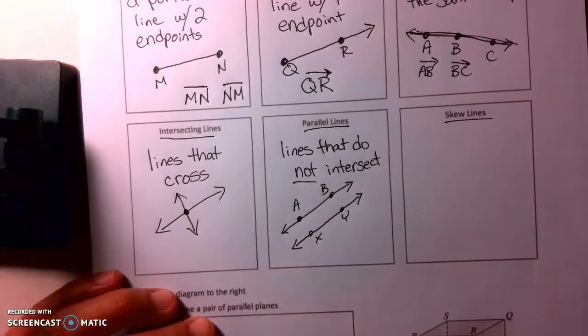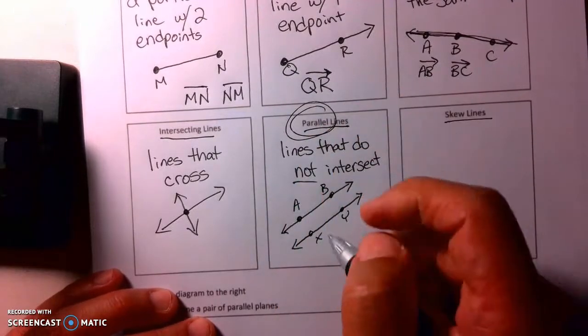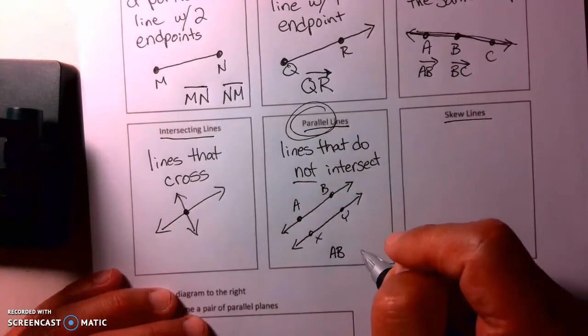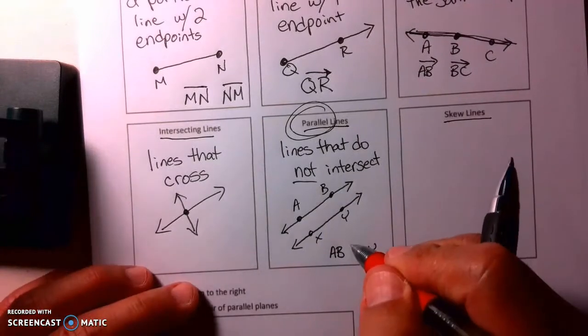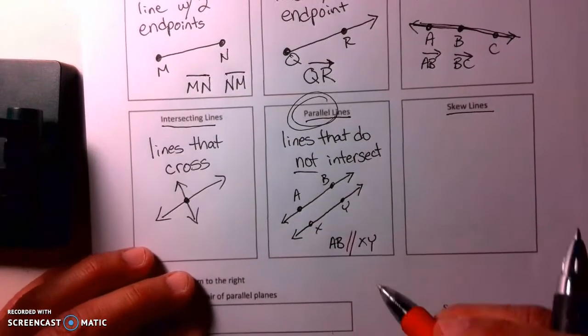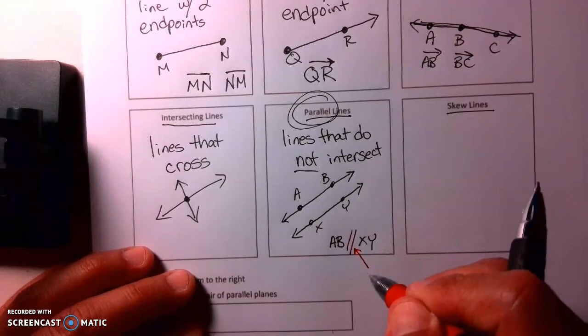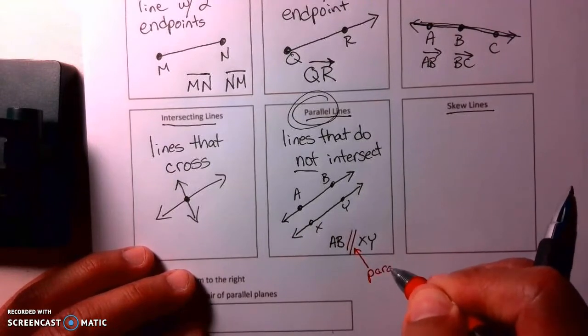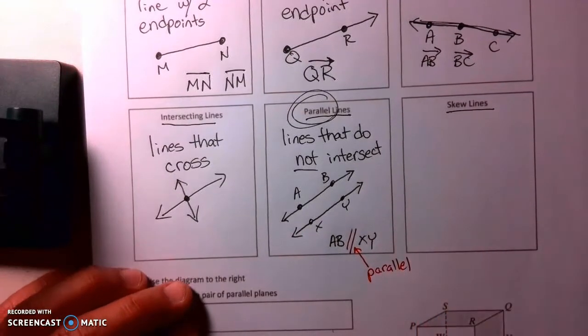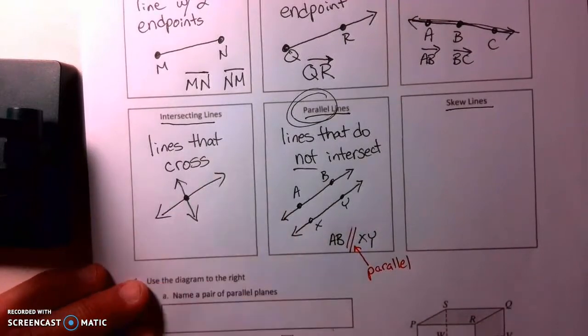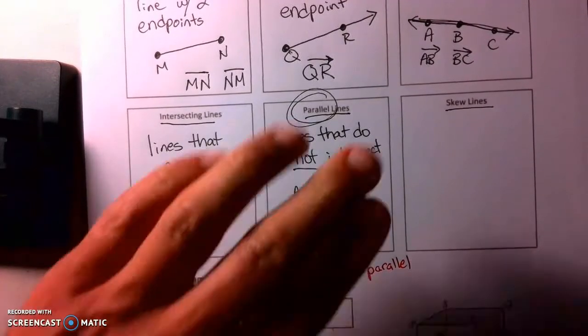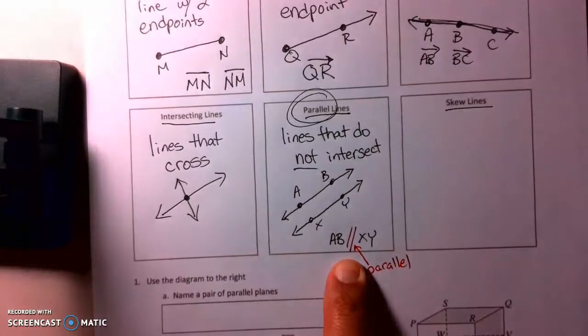Now one of the keys here, I'll call this line AB, and I'll call this XY. One of the symbols that you're going to see for parallel is going to be this. They're going to say AB parallel to XY, and then they're going to use these two lines here. And this symbol here is basically saying the word parallel. There is no symbol for intersecting. They would just say line AB, line XY, just intersect. But that right there, if you didn't have the picture, that means parallel.